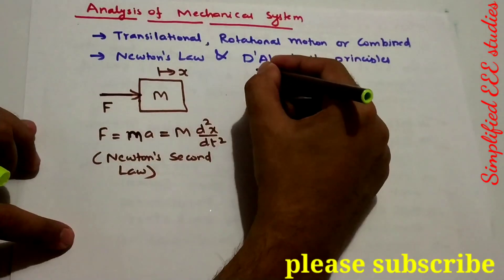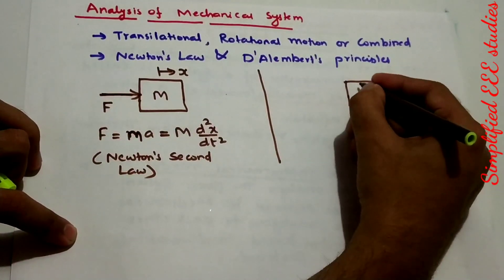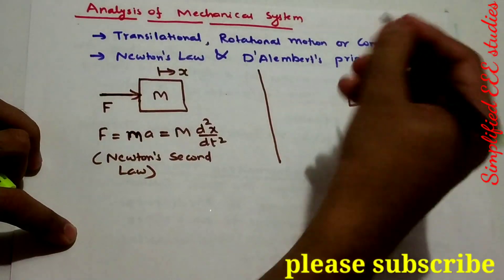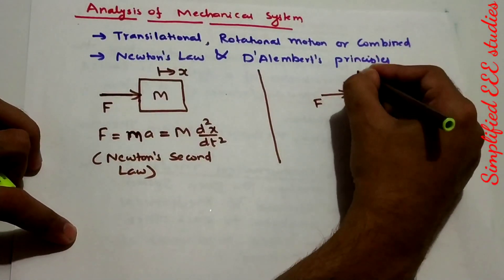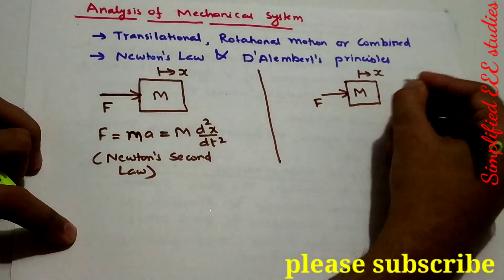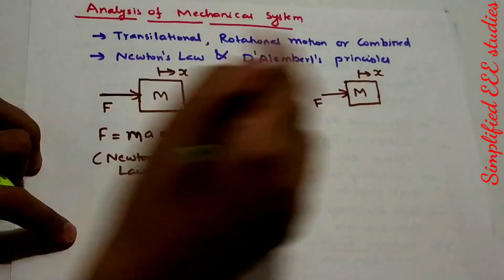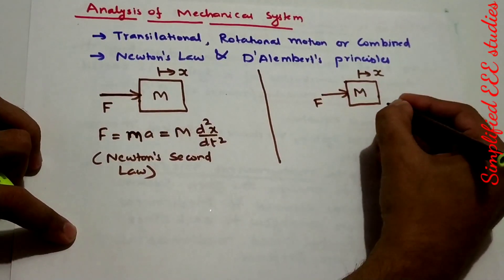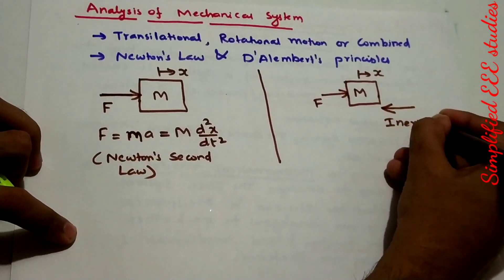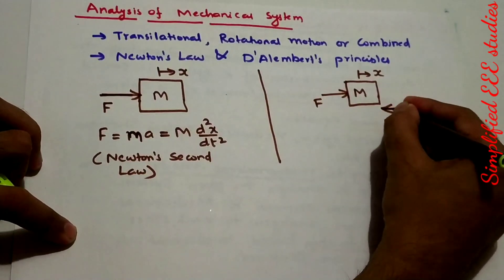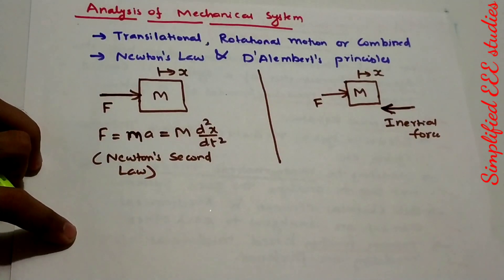Similarly, if you look at D'Alembert's principle: let us have one mass M, with force F applied at a displacement of X. Whenever you are applying a force on a moving object M, there will automatically be one inertial force acting against your direction of motion. That inertial force has to be considered.